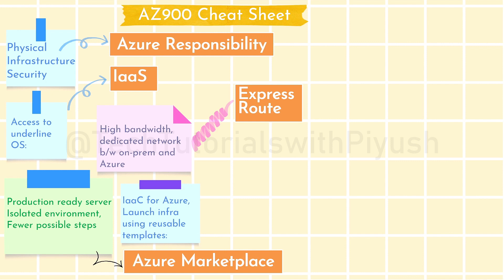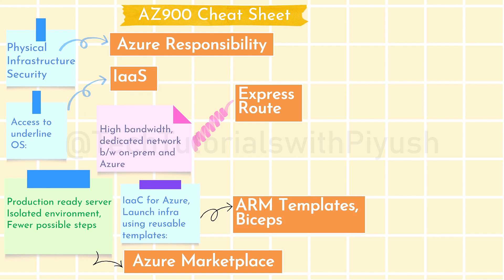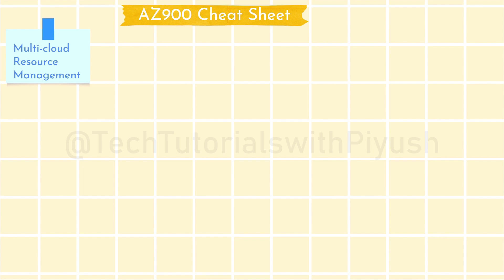If there is a requirement to implement infrastructure as code for Azure — to launch infrastructure using reusable code templates — the answer is ARM Templates (Azure Resource Manager Templates) and Azure Bicep, which is a newer service that can be viewed as an extension or improved version of ARM. If the question talks about multi-cloud resource management capabilities, the answer is Azure Arc, which is a relatively new but important service.